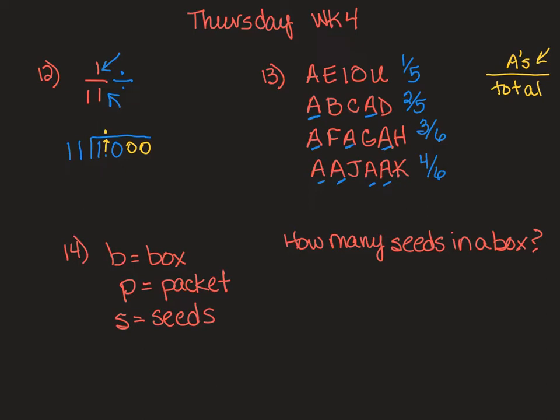Now I need to determine which of these is the greatest fraction, because the greatest gives me the most chance of getting an A. In the first one, I have one out of five chances. In the second, two out of five. In the third, three out of six. And in the last, four out of six. Which one is the greatest fraction?